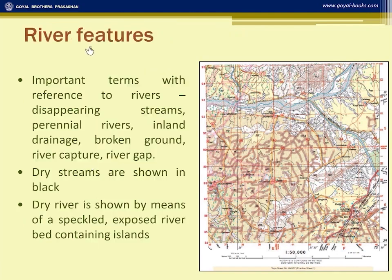There are many features connected with rivers, and many questions are asked based on these features. First, this river is dry — you can be sure because the river bed is speckled with black dots, showing that the river bed is exposed.